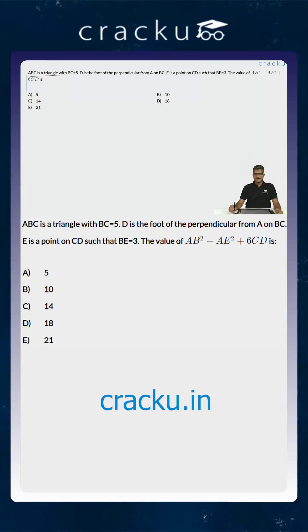In this question we are told that ABC is a triangle such that BC is equal to 5 units and D is the foot of the perpendicular from A to BC. So let us assume that this is how the triangle ABC is.